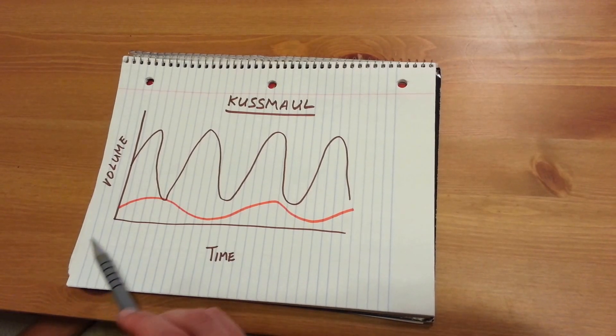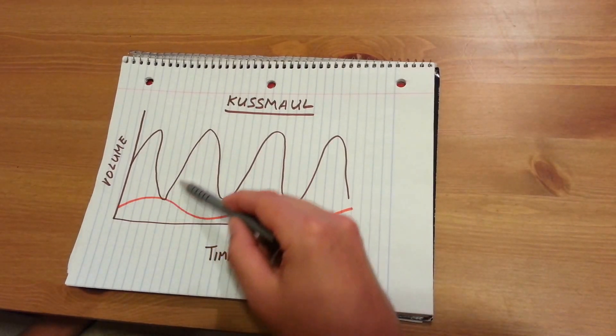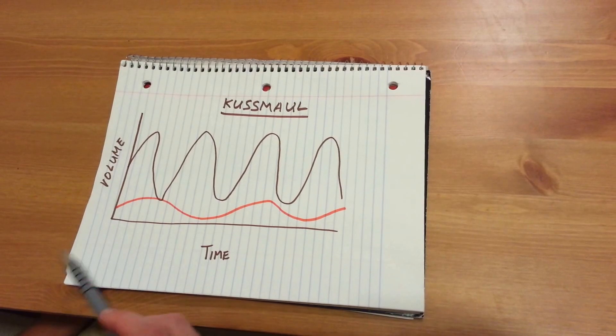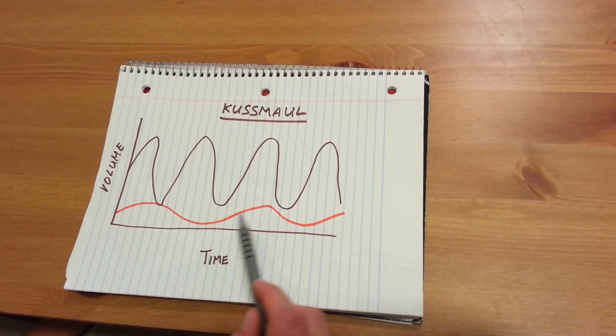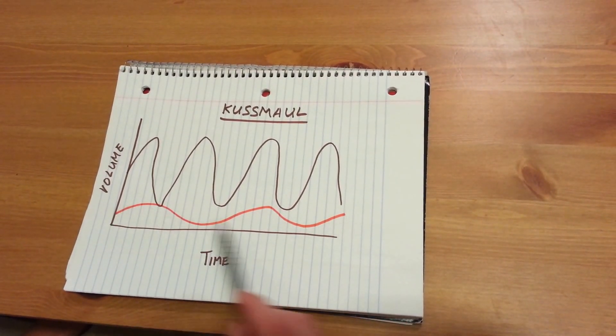On this drawing, compare the deep, fast pattern of Kussmaul respirations to a normal respiration pattern here, which is smooth, very regular, and drawn out in comparison.